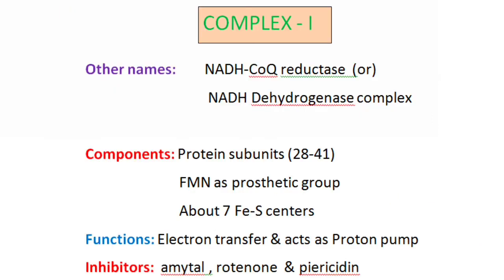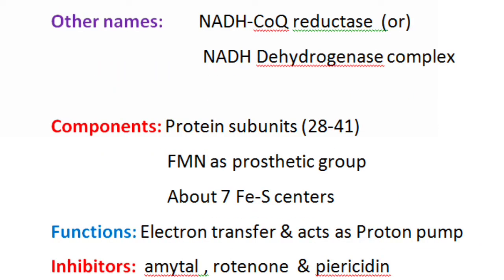Starting with the reactions of Complex I — before going into the details, let us see some important features. Complex I has other names: it is also called NADH coenzyme Q reductase or NADH dehydrogenase complex. The components of Complex I include protein subunits, FMN as the prosthetic group, and iron-sulfur centers.